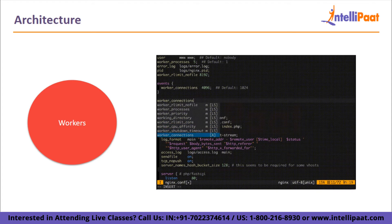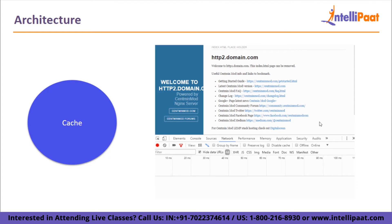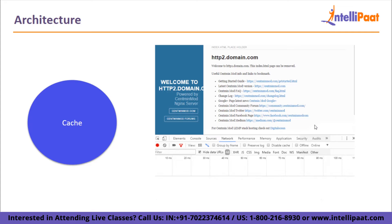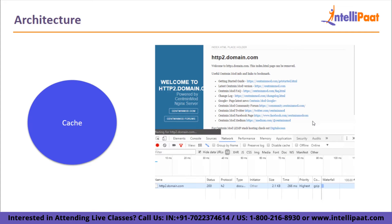Now let's take a look at cache. By reading from cache memory rather than the server, the Nginx cache is used to render the page very quickly. On the first request for a page, the pages are placed in cache memory.